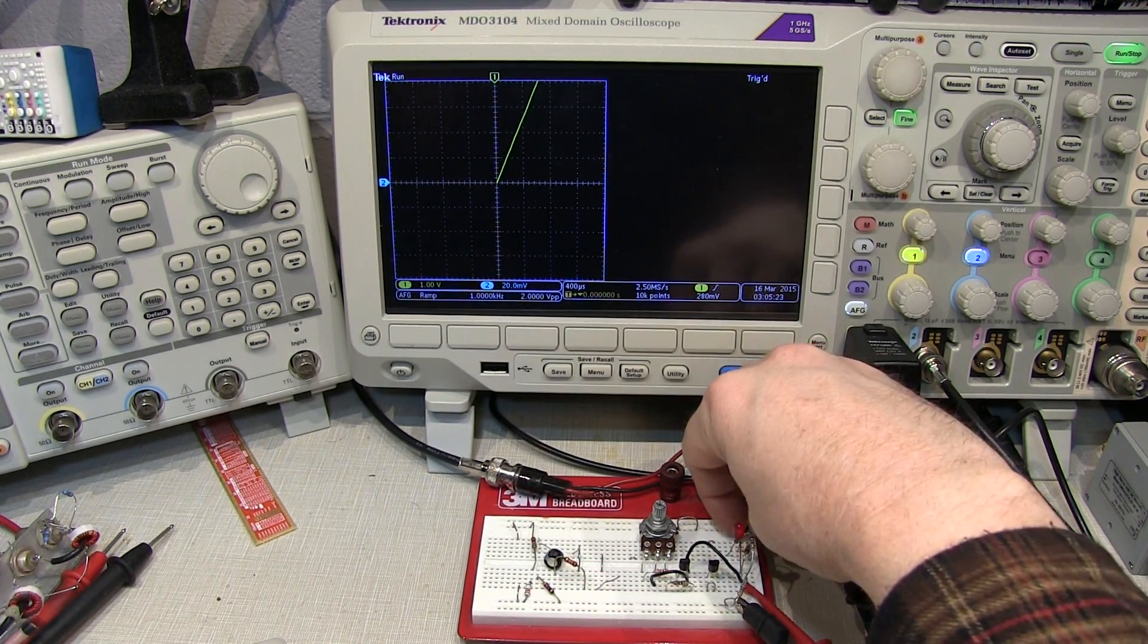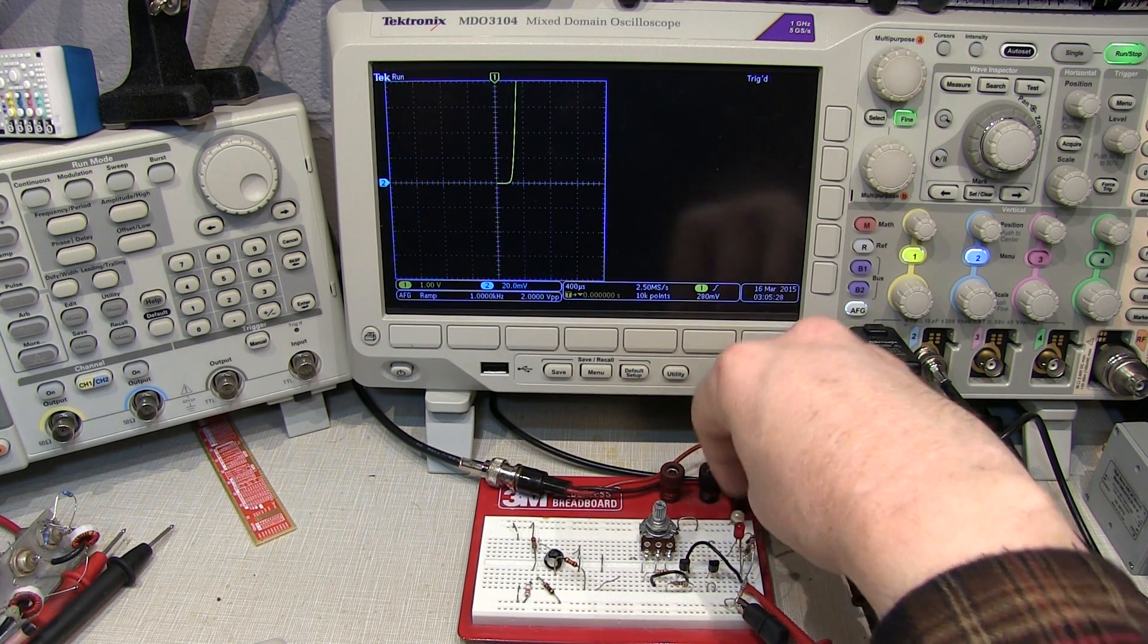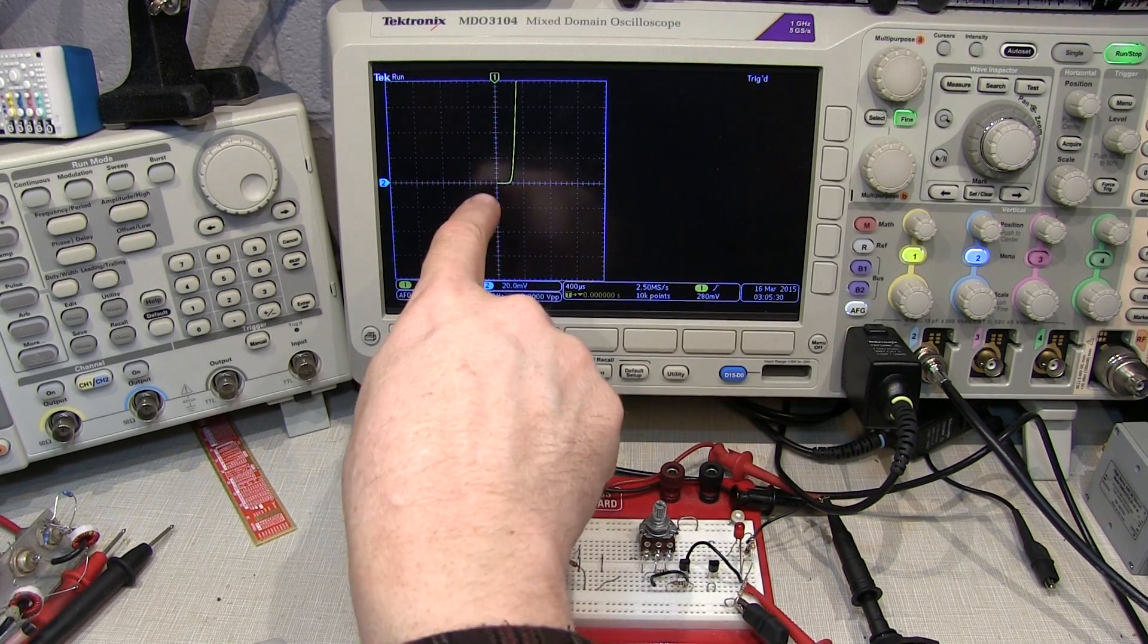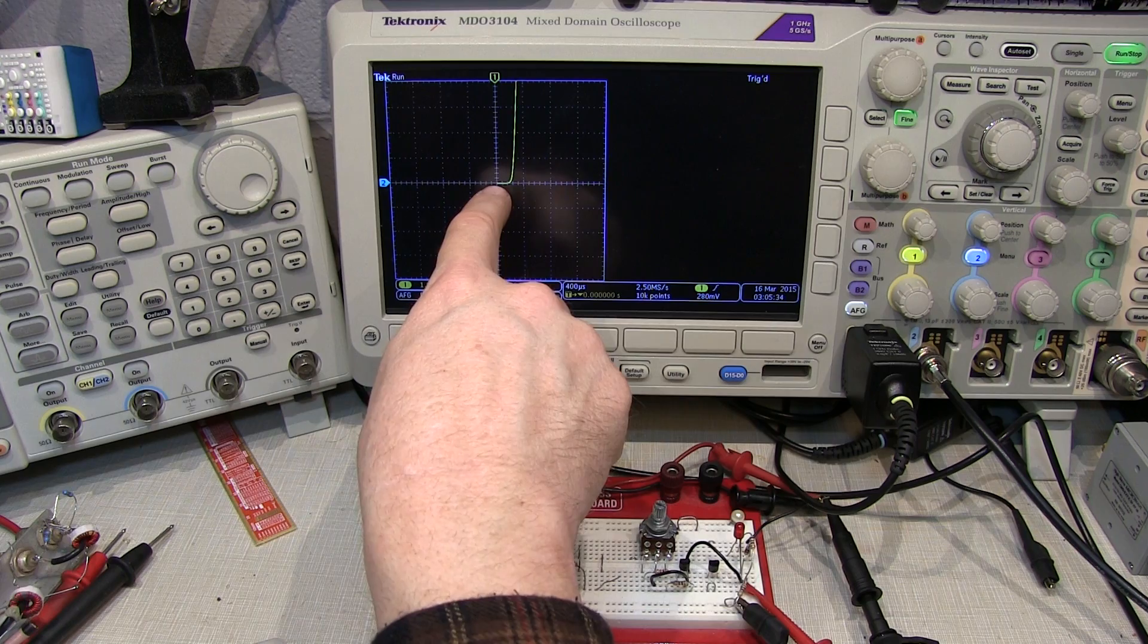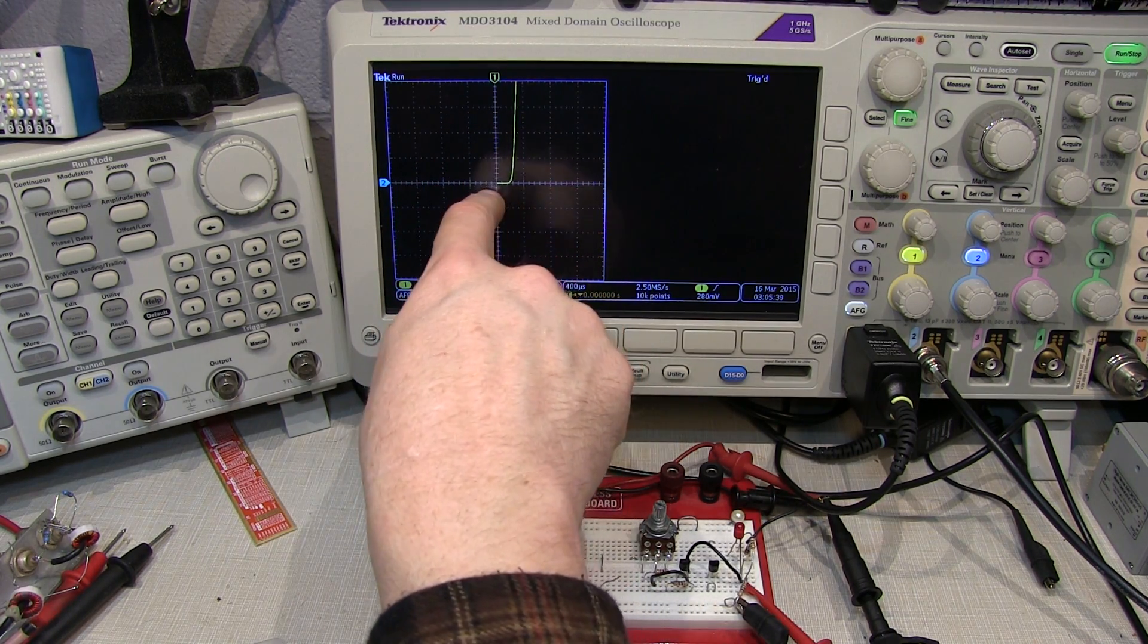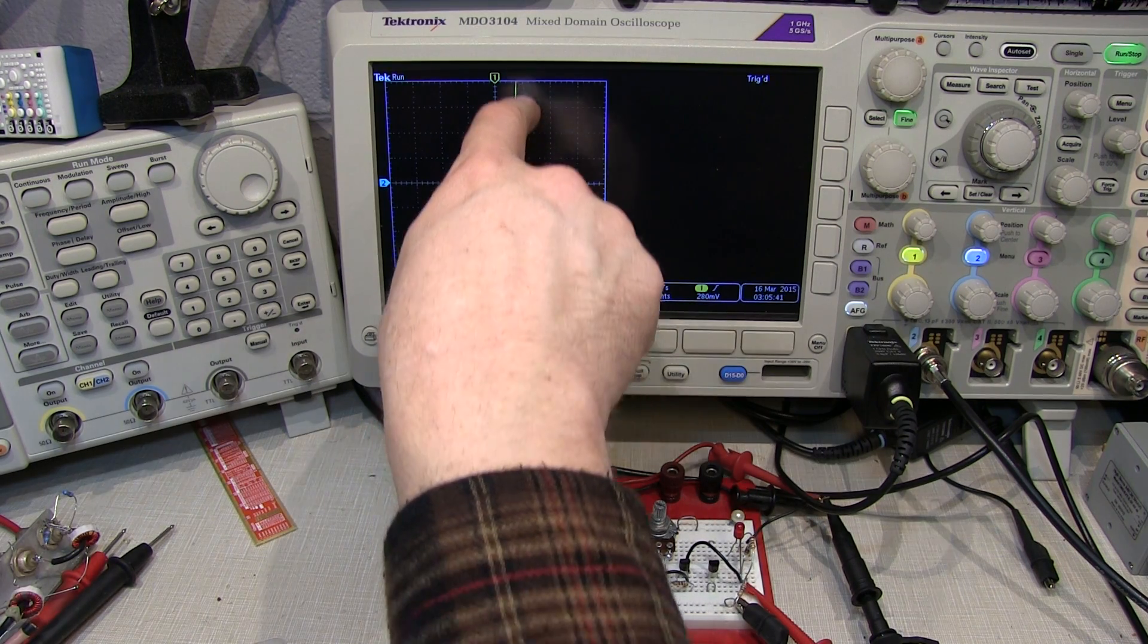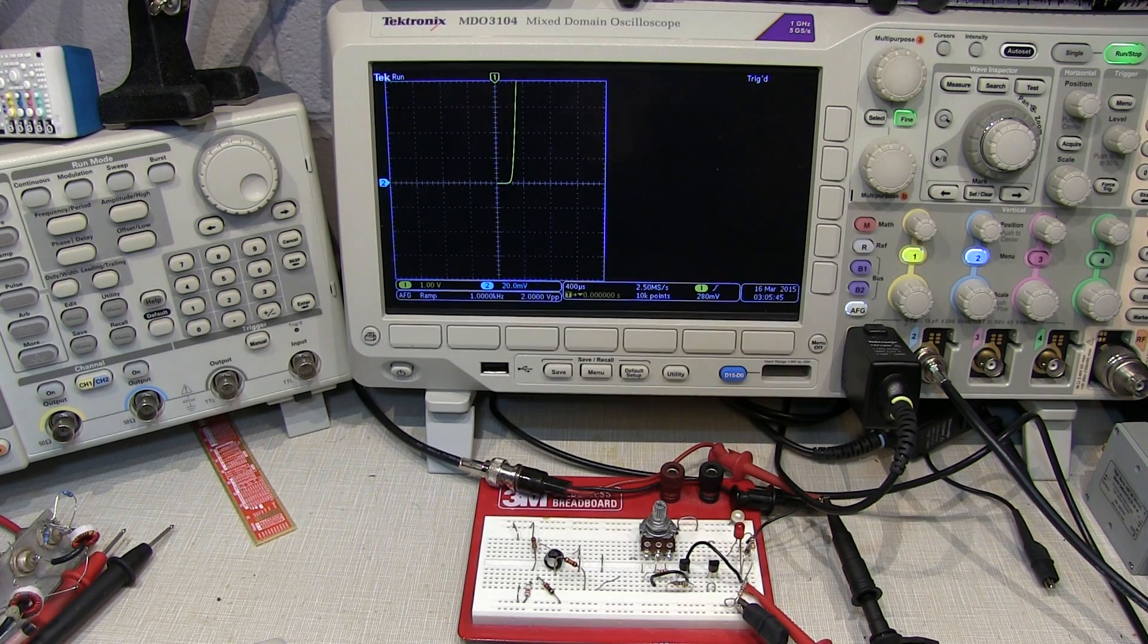Now if I move the function generator output from the resistor to a diode, we can see the familiar diode characteristic. If we look, we're at one volt per division horizontally here, so I can see at about six tenths of a volt or so, the diode starts turning on. As the voltage goes up, the current starts increasing rapidly. This is exactly what we'd expect to see from a simple silicon diode.